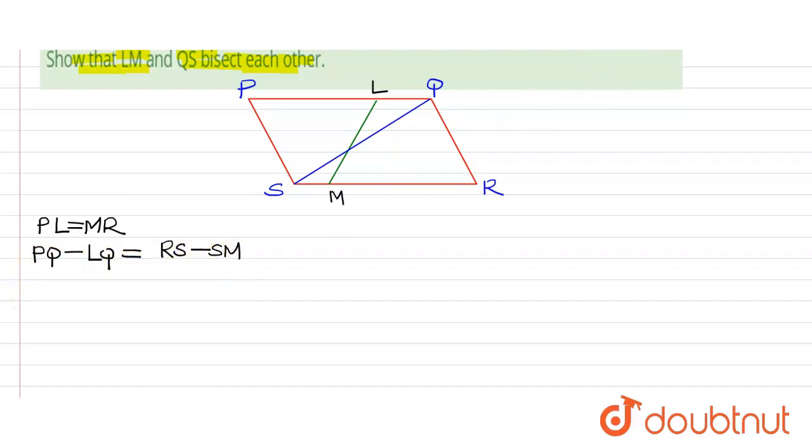Therefore, we can cancel out these terms. So these two terms get cancelled out since PQ is equals to RS. And we get the equation that LQ is equals to SM.